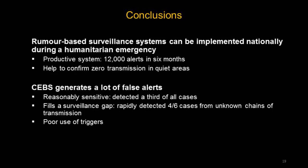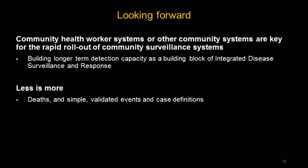To conclude: rumor-based surveillance systems can be implemented nationally during a humanitarian emergency. This was a productive system that generated many alerts and helped confirm that zero transmission was occurring in quieter areas. CEBS did generate many false alerts, but was reasonably sensitive, detecting a third of cases — and many other cases were already under contact tracing. It filled a surveillance gap by rapidly detecting four out of six cases from unknown chains of transmission, suggesting timeliness. There was, however, poor use of triggers. Looking forward, community health worker systems are key for the rapid rollout of surveillance systems, and there are ongoing discussions to build longer-term detection capacity through community networks as part of integrated disease surveillance and response systems in West Africa.